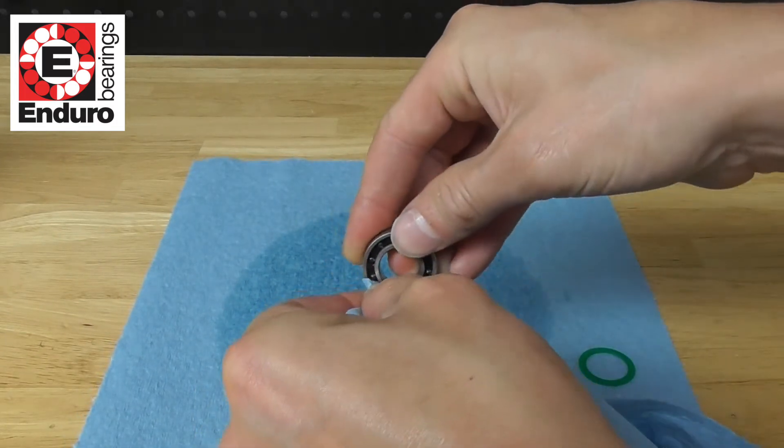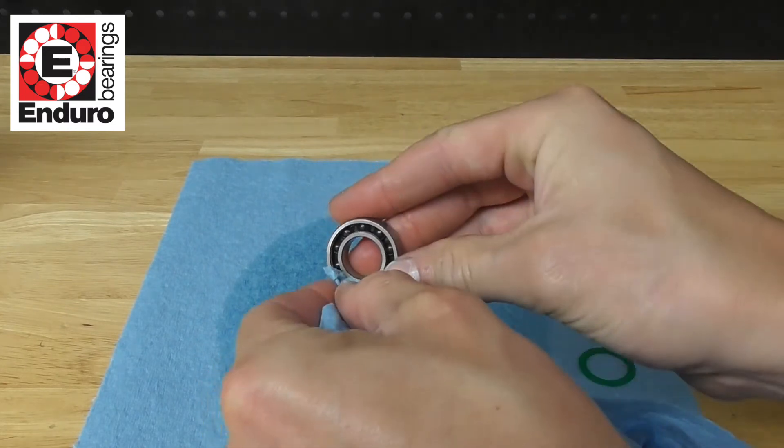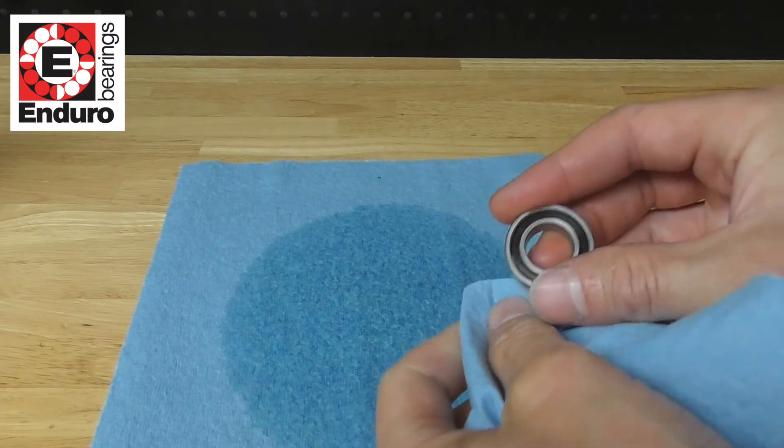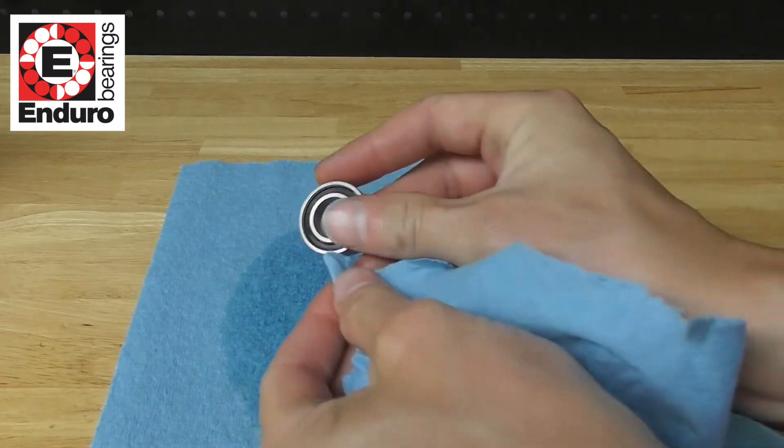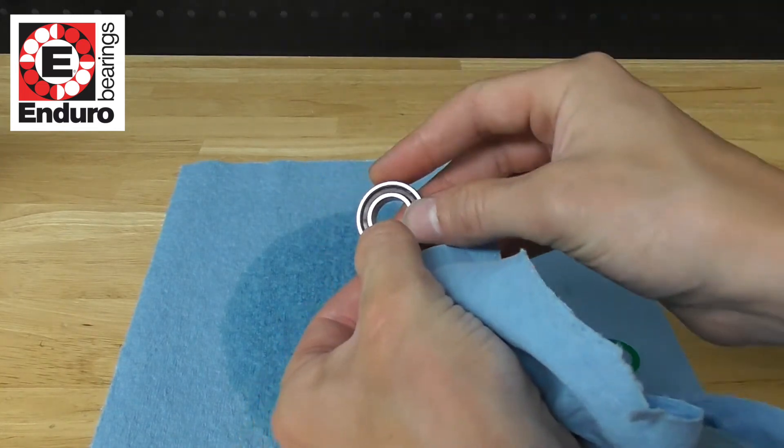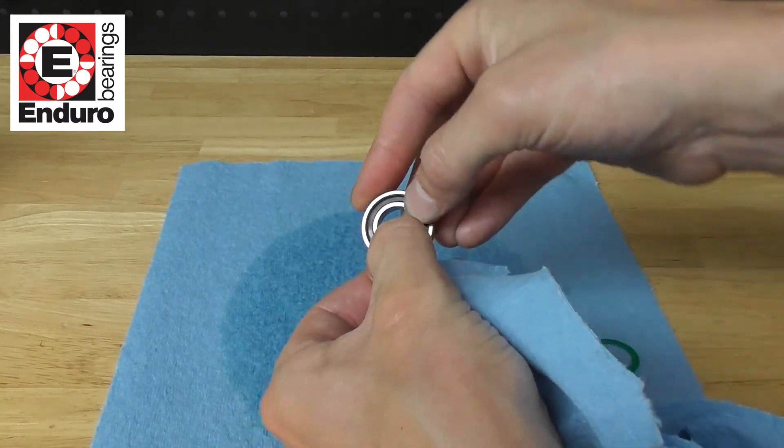Use the edge of a towel to remove any remaining grease and contaminants from inside the bearing. Do this on both sides until all contaminants or grease are thoroughly removed.